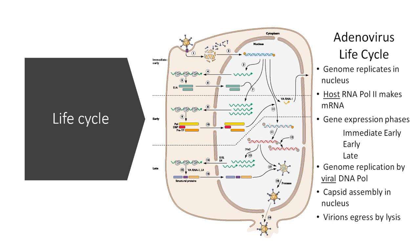To understand the life cycle of adenovirus, there are important key points: the genome replicates in the nucleus; host RNA polymerase 2 is hijacked to make the viral mRNA; there are three gene expression phases — immediate early, early, and late; genome replication is done by viral DNA polymerase; capsid assembly occurs inside the nucleus; and the virion exits by lysis.